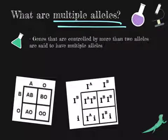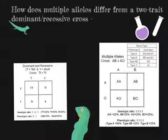Well, they are genes that are controlled by more than two alleles, shown here at the bottom in these two Punnett squares. Before we go over how to set up a multiple allele Punnett square, I'm going to go over what's different between a two-trait Punnett square and the multiple allele Punnett squares.